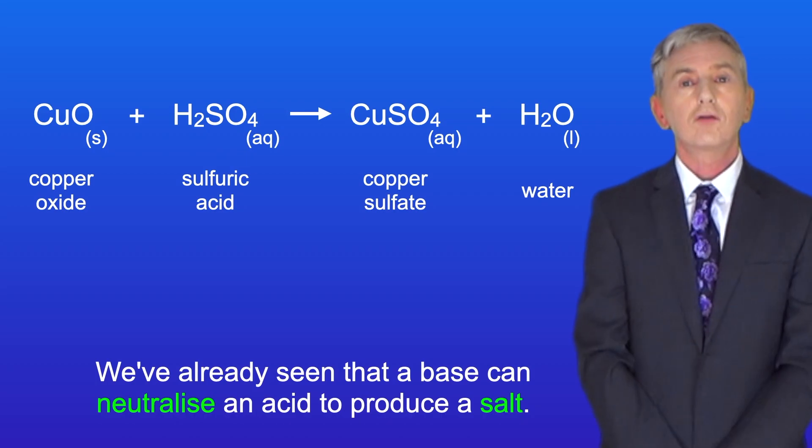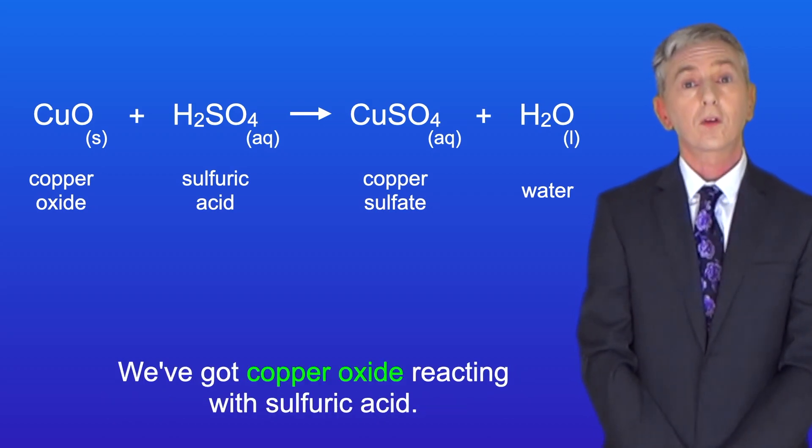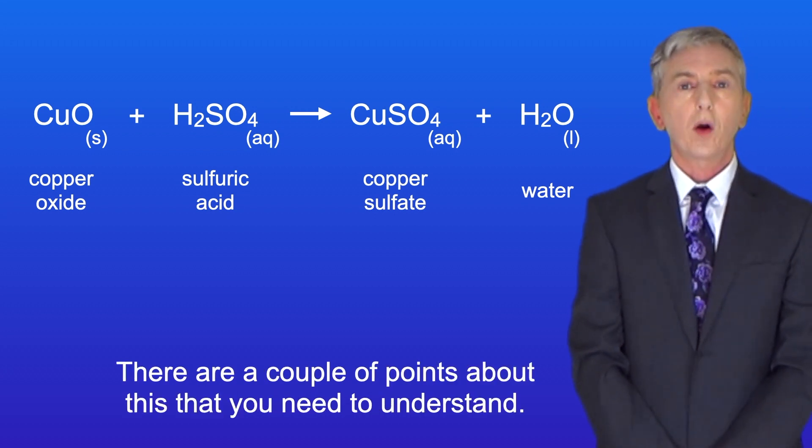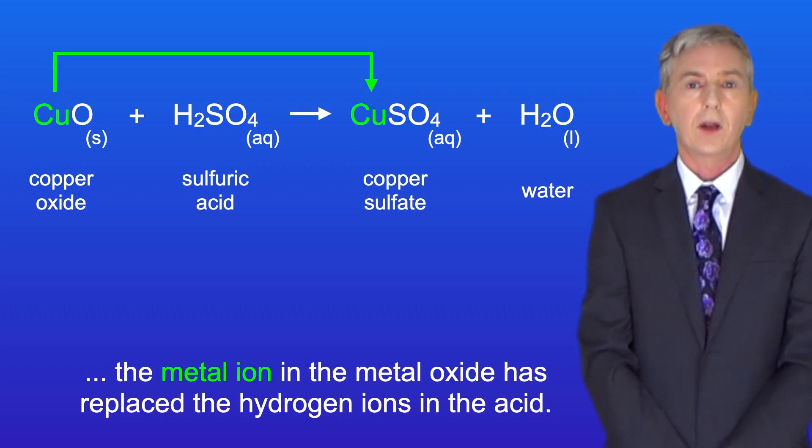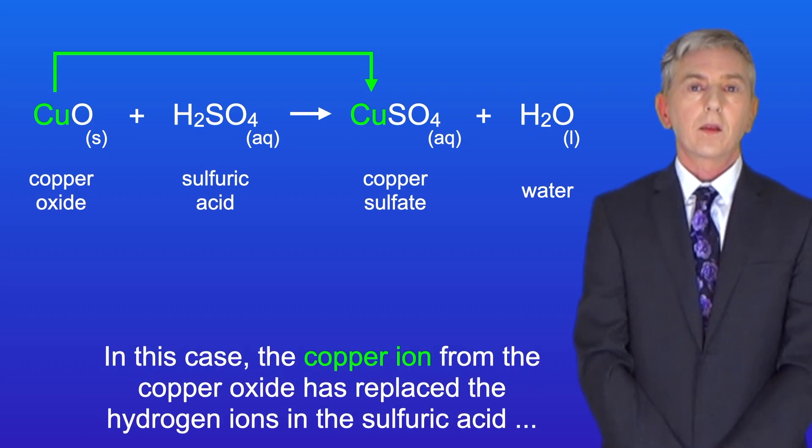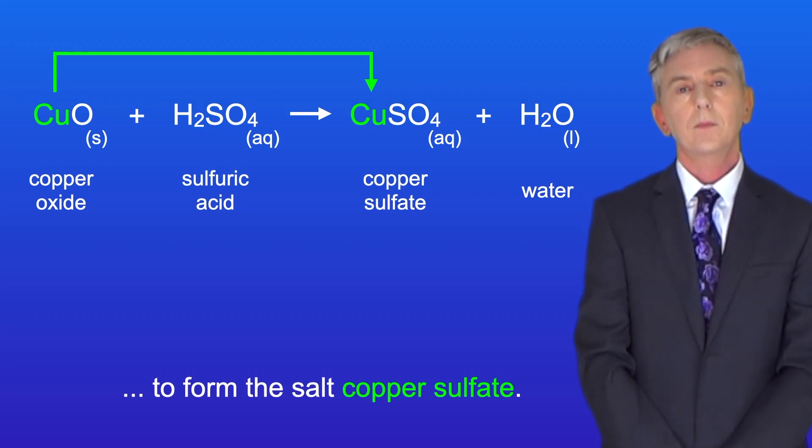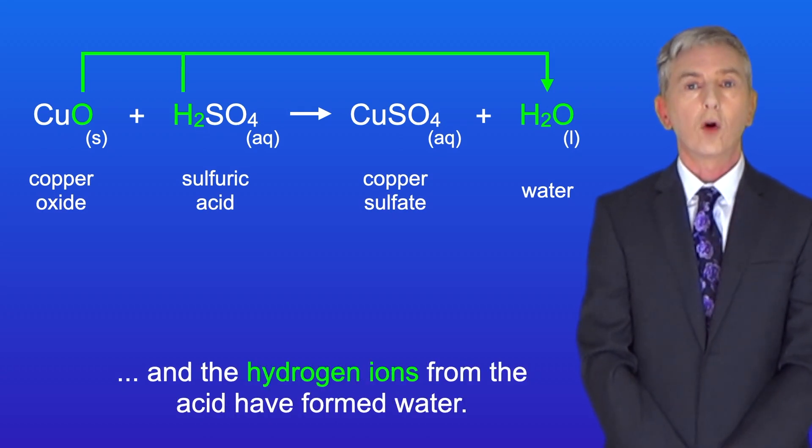Okay we've already seen that a base can neutralize an acid to produce a salt. I'm showing you here the reaction between a metal oxide and an acid. We've got copper oxide reacting with sulfuric acid and we're making the salt copper sulfate and water. Now there are a couple of points about this that you need to understand. Firstly when we form the salt the metal ion in the metal oxide has replaced the hydrogen ions in the acid. So in this case the copper ion from the copper oxide has replaced the hydrogen ions in the sulfuric acid to form the salt copper sulfate. We can also see that the oxide ion from the metal oxide and the hydrogen ions from the acid have formed water.